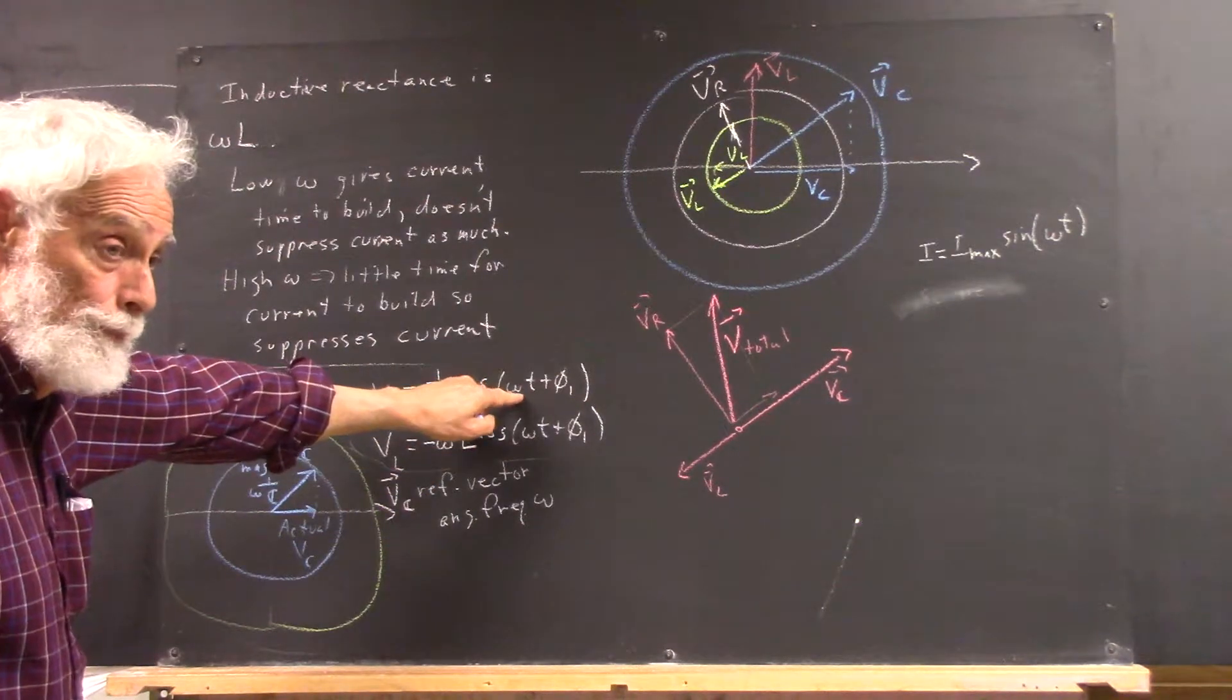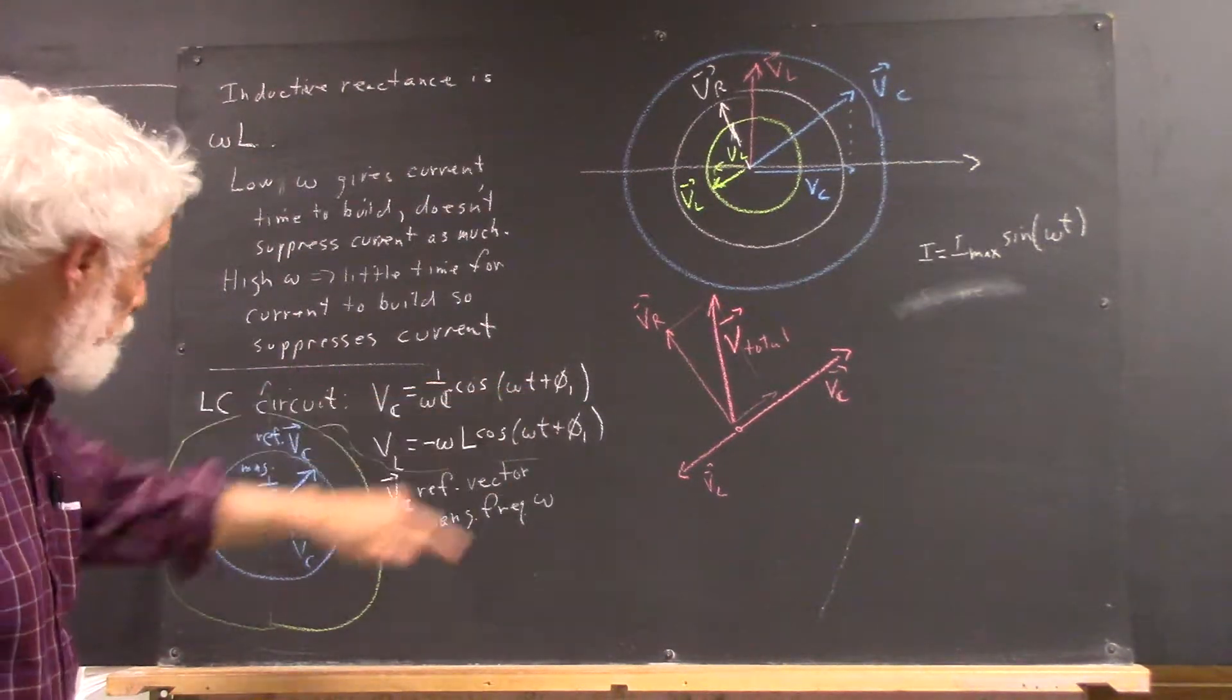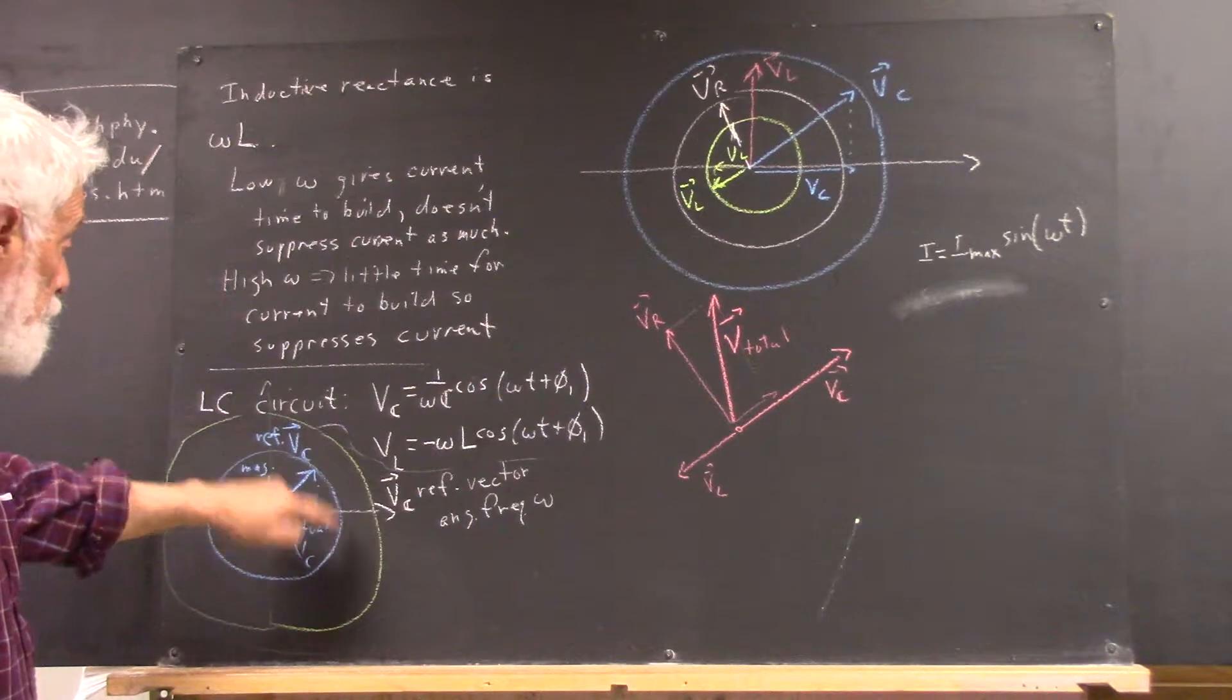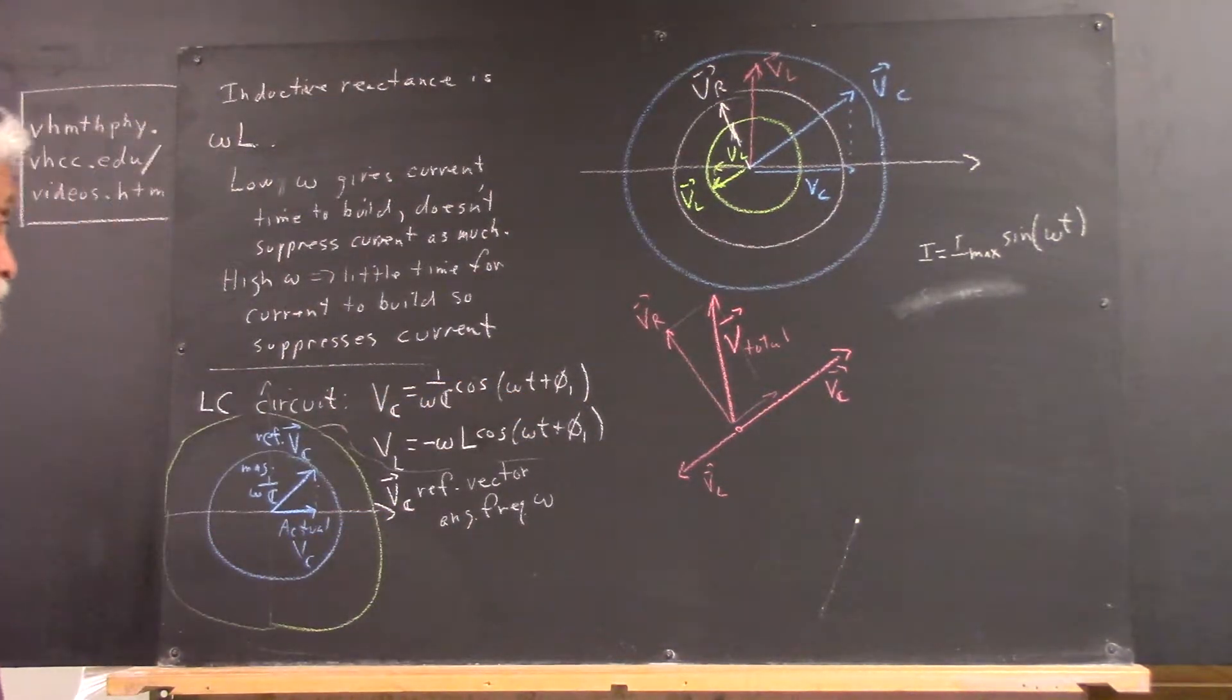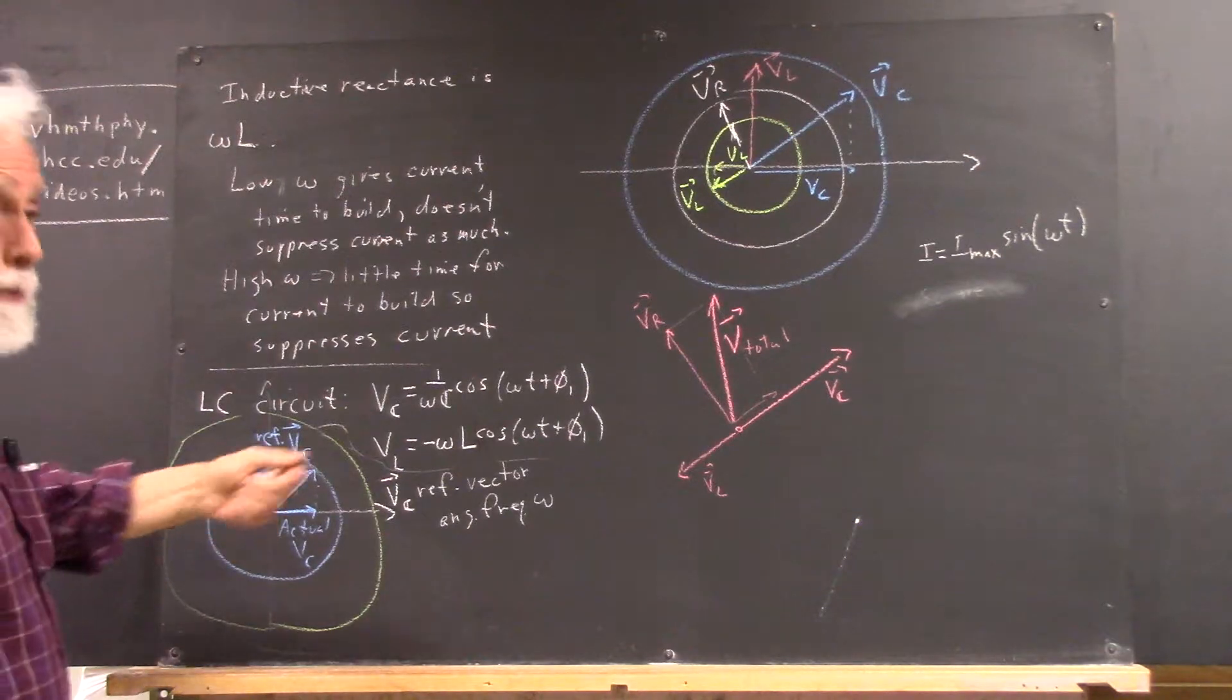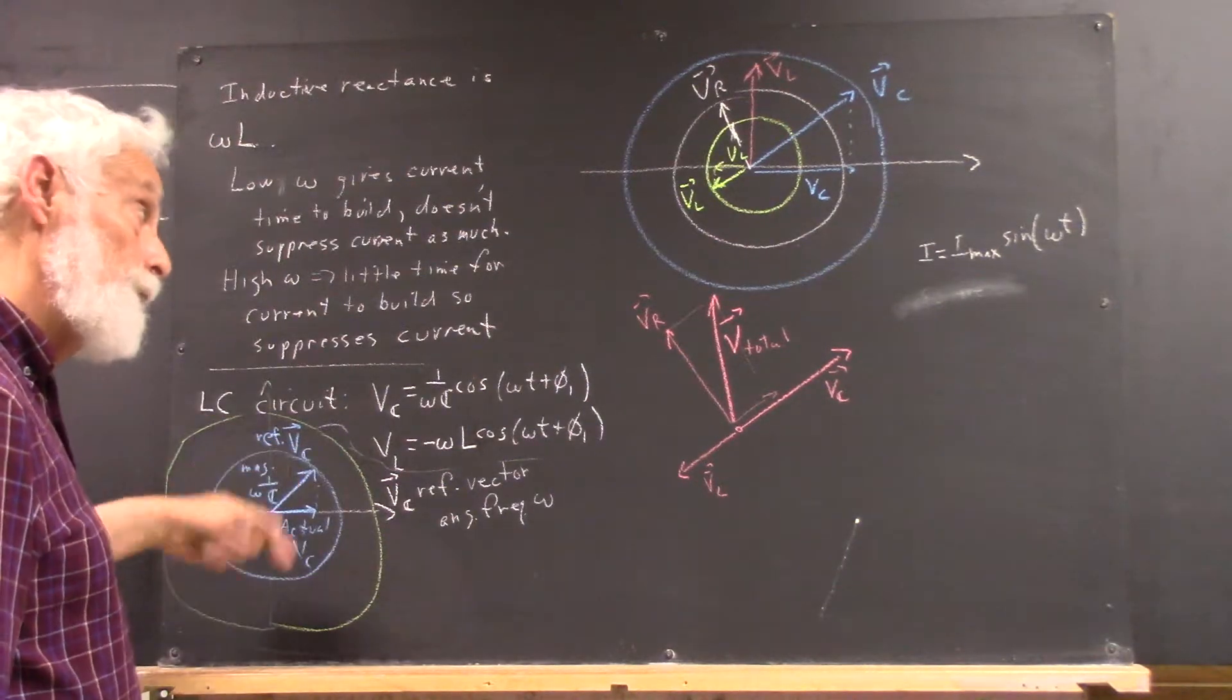If omega is large, then a small change in t will take you all the way around the circle, so you'll be going around the circle very fast. If omega is small, omega t is going to change more slowly, you'll go around the circle much more slowly.